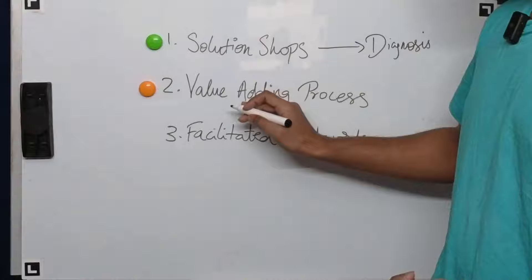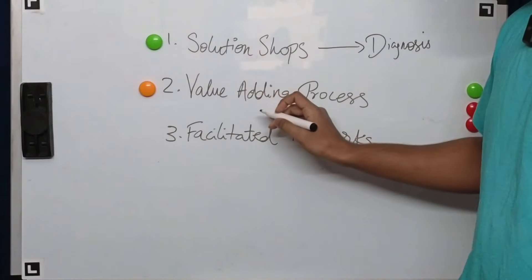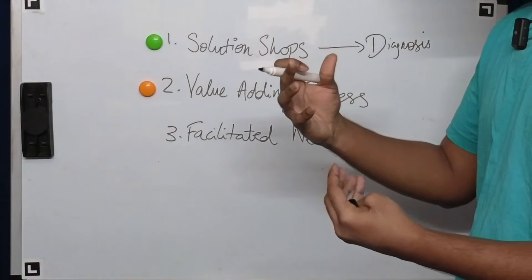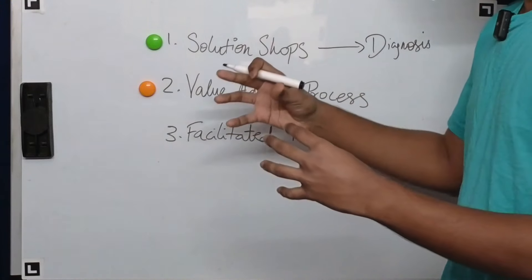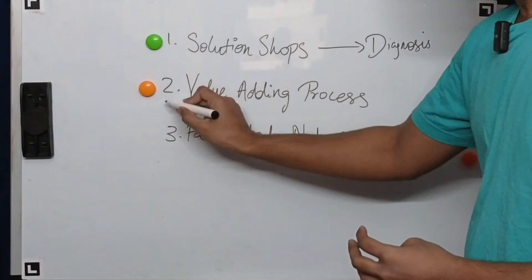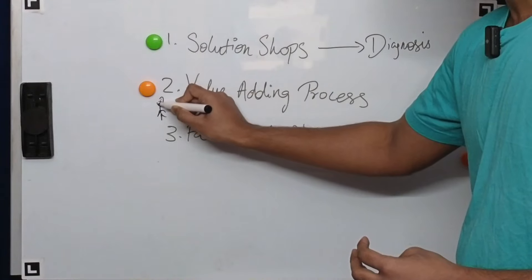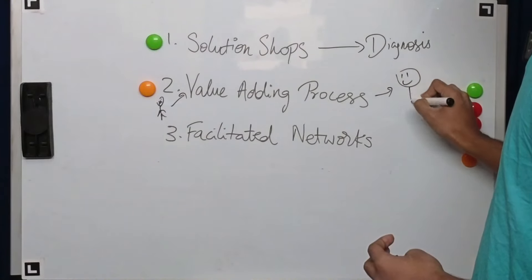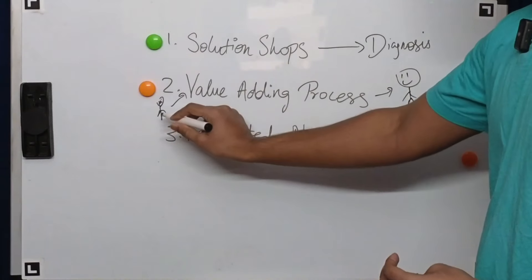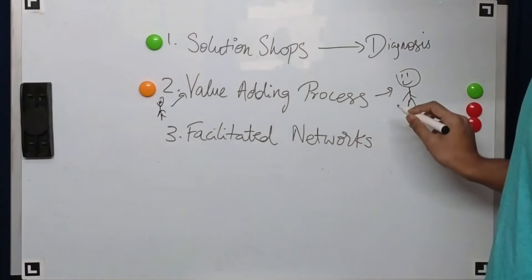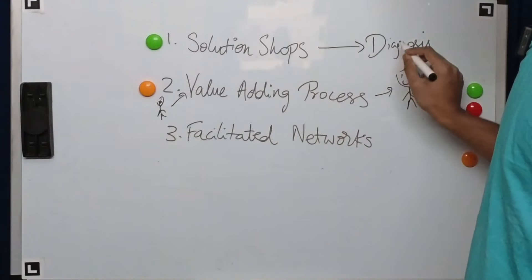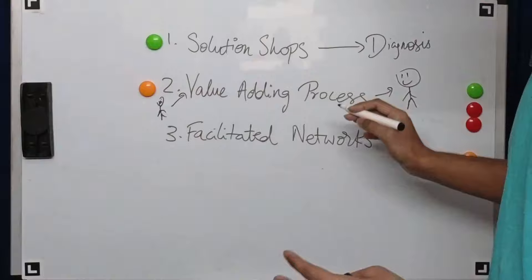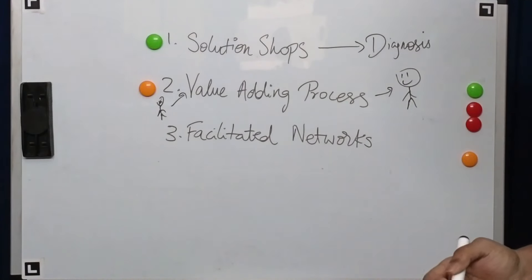In the context of medicine, what innovators prescription is arguing is that a patient with a particular diagnosis for whom a particular procedure can be done is indeed going through a value adding process. The patient comes in sick and they go out happy - they have been cured. This can be done independently of the solution shop. The diagnosis can be done in one specific locality and the value adding process can be done in a completely different location.